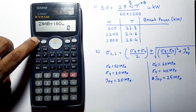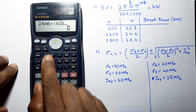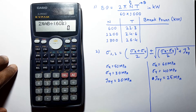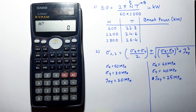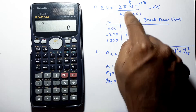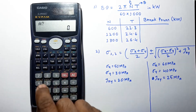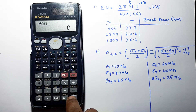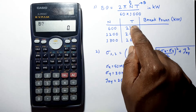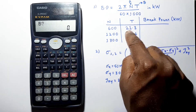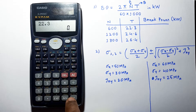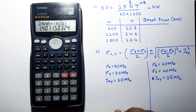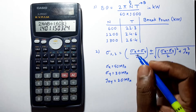Divided by 60 — instead of writing 1000 I will simply use K here. Press Shift 6 to select K, close the bracket, and press the calculate button. Now it will ask for the value of A, which is N in RPM. Enter this value as 600. Now it will ask for the value of torque T.